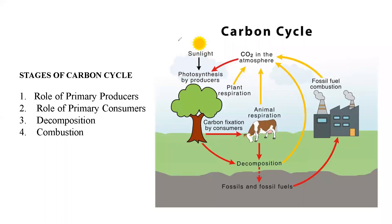Hello everyone. In this lecture, we are going to talk about the carbon cycle. The circulation of carbon on Earth is very important. The reason being that plants take up carbon dioxide from the atmosphere for producing food material by the process of photosynthesis.